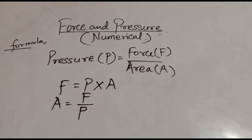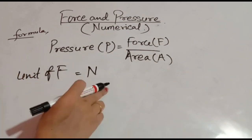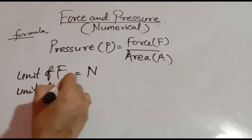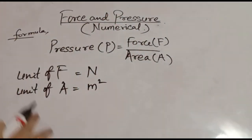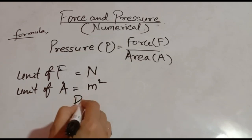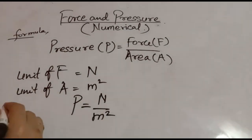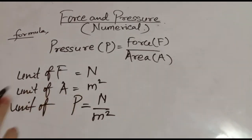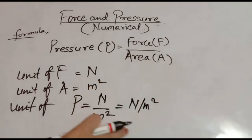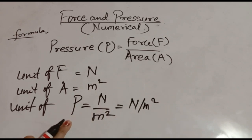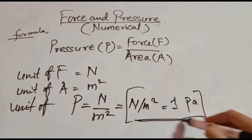Now first understand the units of all three things. Unit of force is Newton. Unit of area is meter square. In this formula, if you put both units, then the unit of pressure will be Newton divided by meter square. This is known as 1 Pascal. So 1 Pascal is equal to 1 Newton per meter square.